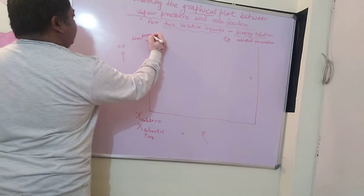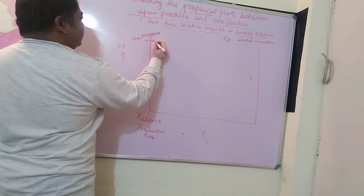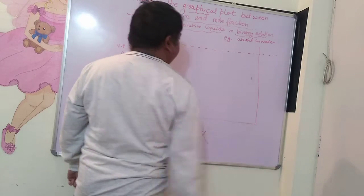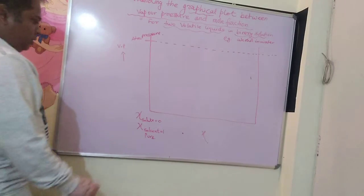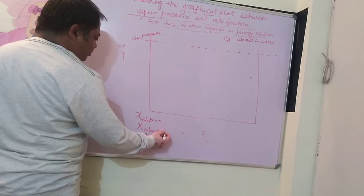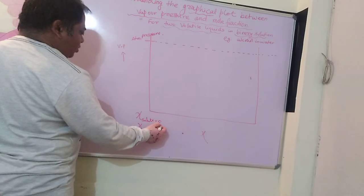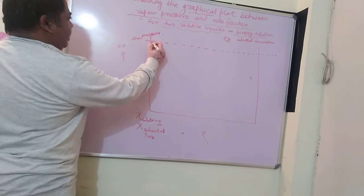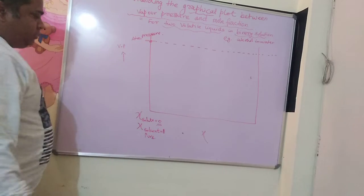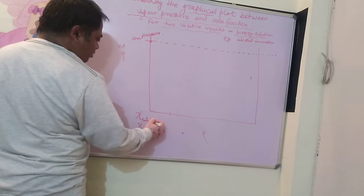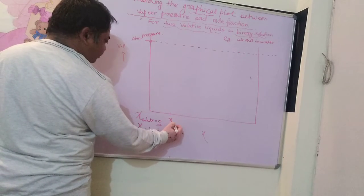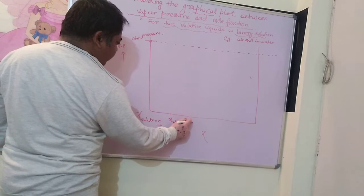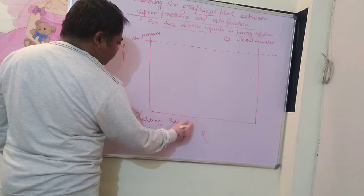Vapour pressure cannot exceed atmospheric pressure, so atmospheric pressure is the maximum limit of pressure that can be attained. Since only solvent is present and no solute, it is at maximum concentration and its vapour pressure is at atmospheric pressure.